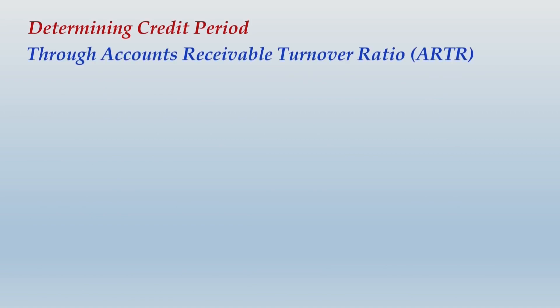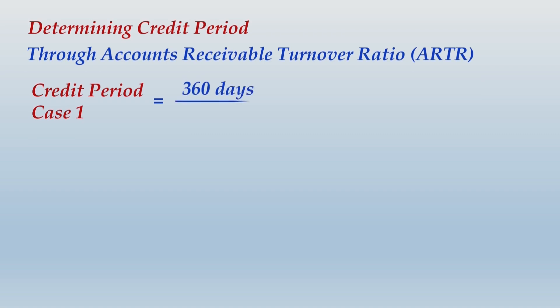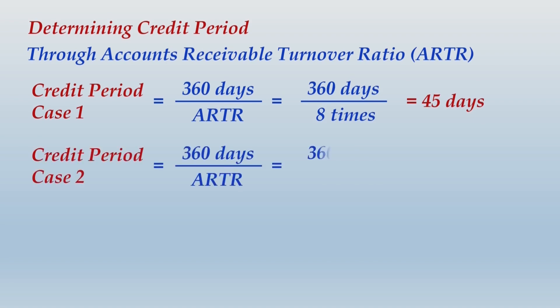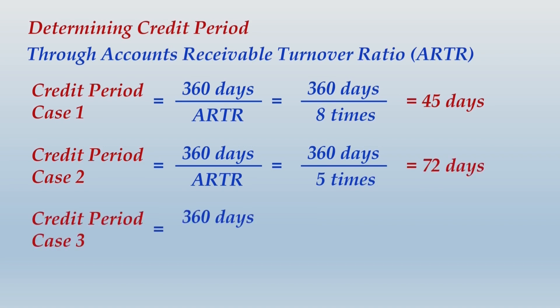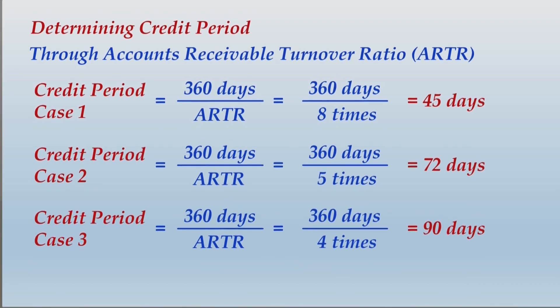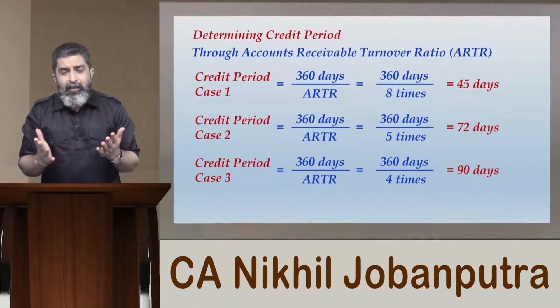In your answer, you would say: determining the credit period through accounts receivable turnover ratio. Credit period in case 1 will be 360 days divided by 8 times, that is 45 days. In case 2, it will be 360 divided by 5 times, that is 72 days. In case 3, it will be 360 divided by 4 times, that comes to 90 days.